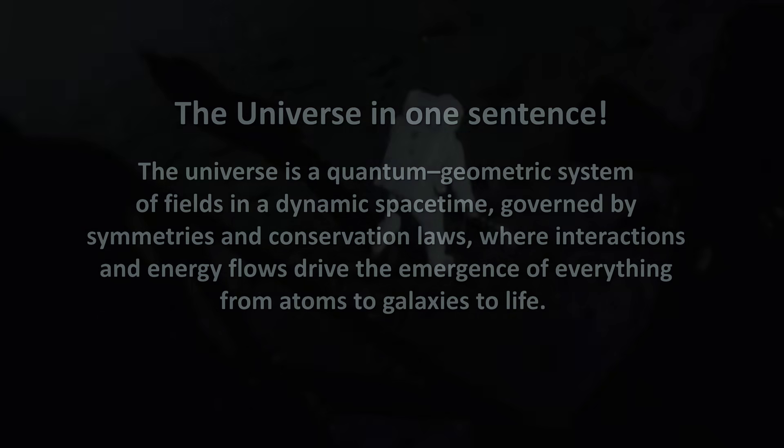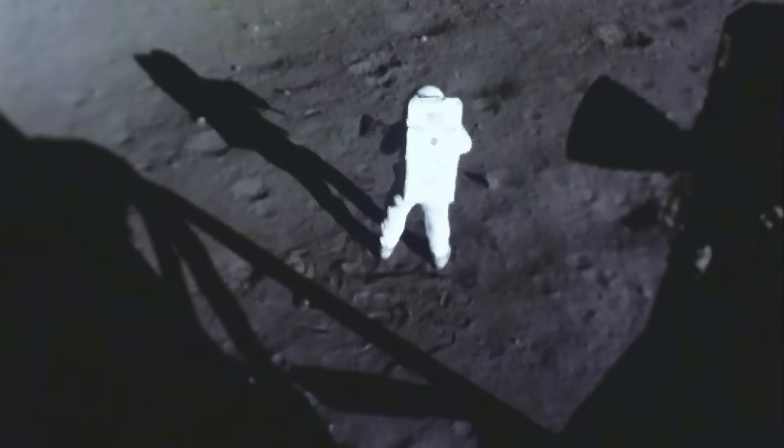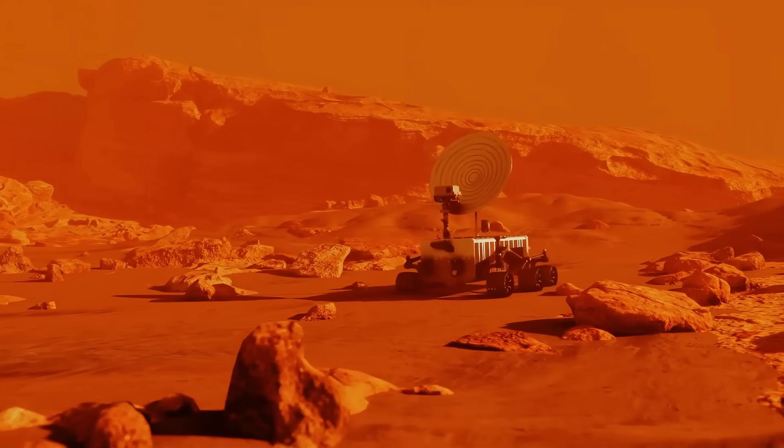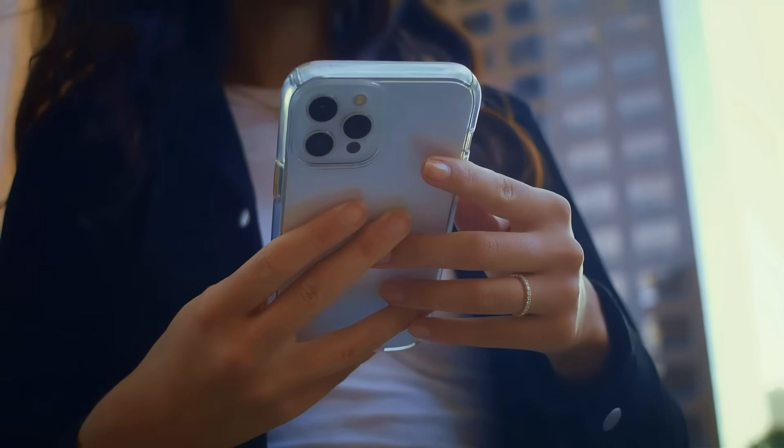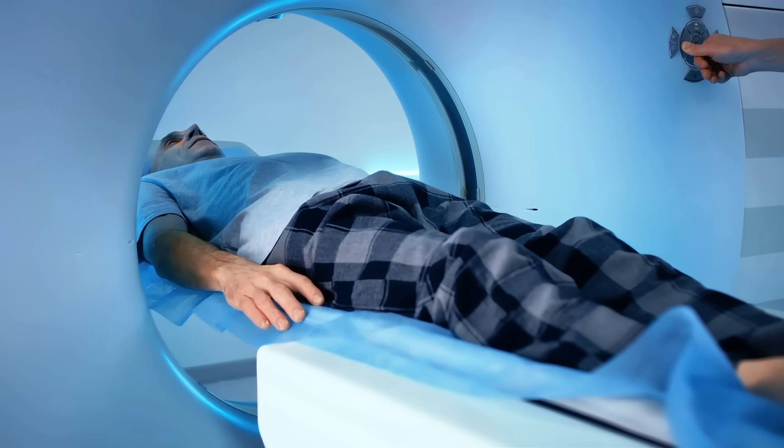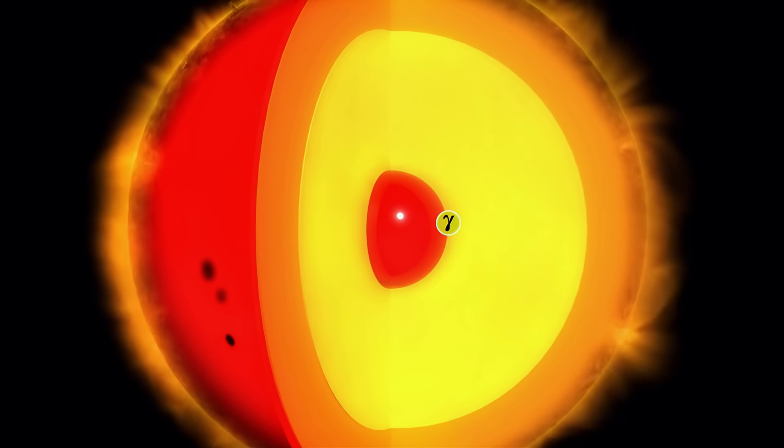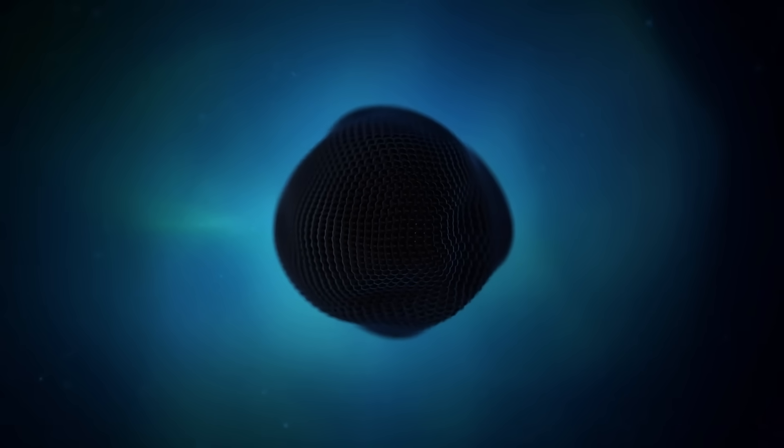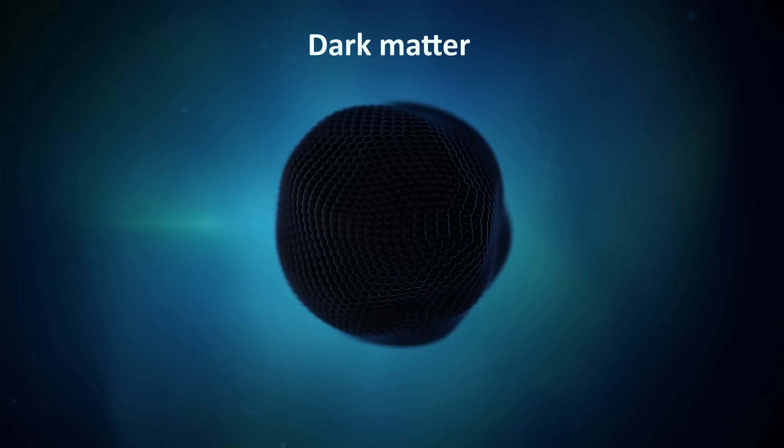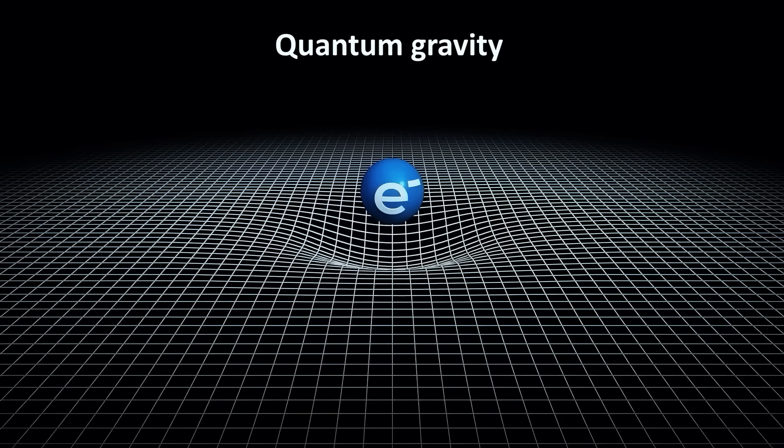That's the rule book we know of. And it's good enough to put people on the moon, rovers on Mars, build smartphones, diagnose disease with MRI, and explain why stars shine. Know that many pages of this book are still blank. Dark matter, dark energy, quantum gravity. But these are invitations to you, the next generation of scientists to fill out.